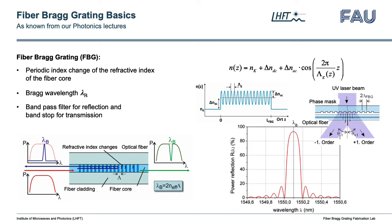A fiber Bragg grating, or FBG for short, is a periodic index change in the core of an optical glass fiber. Light with a wavelength that fulfills the Bragg condition will get reflected by the grating. You probably have heard all this in one of our Photonics lectures.